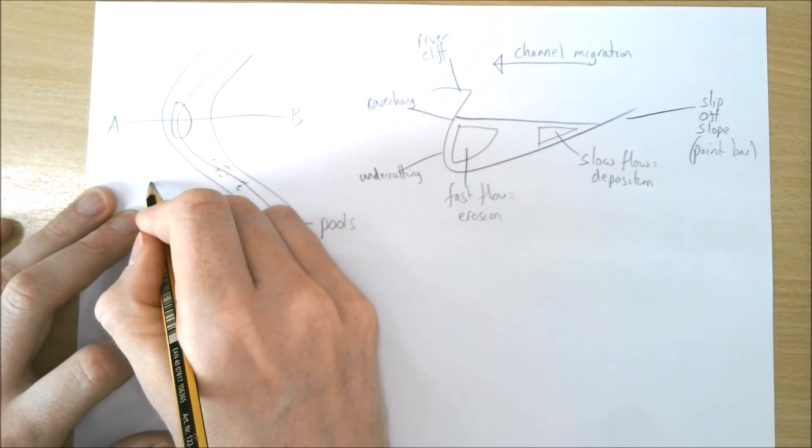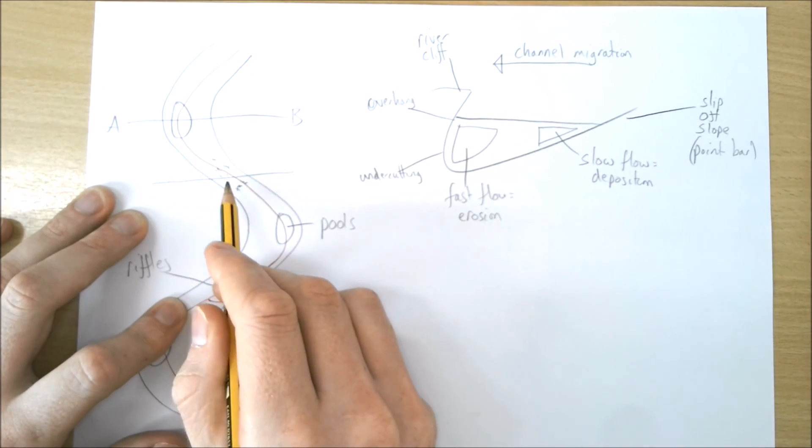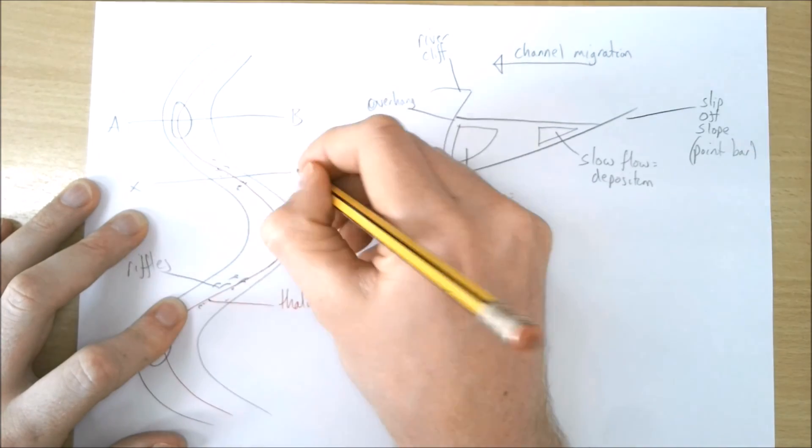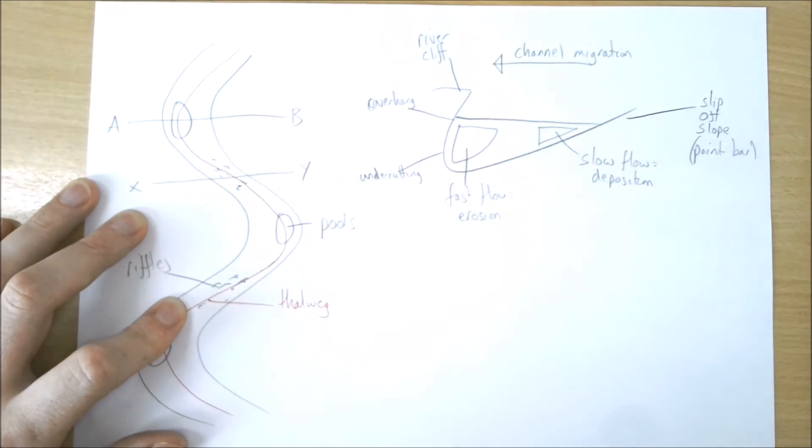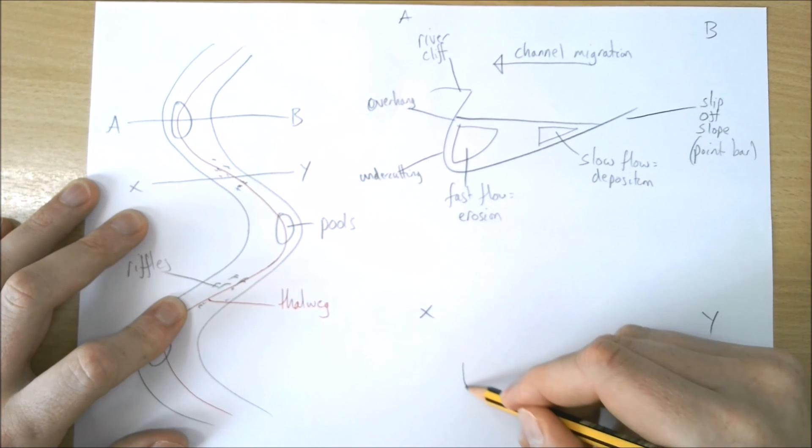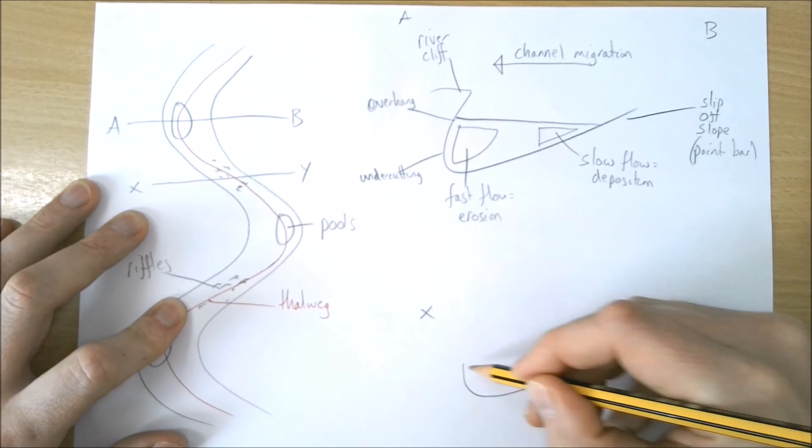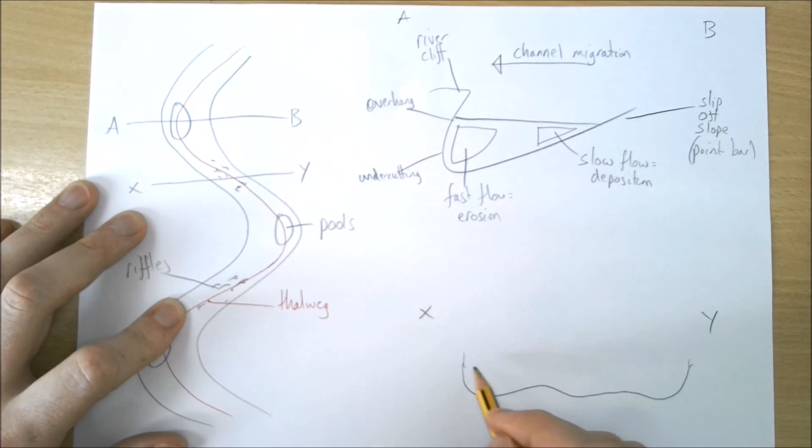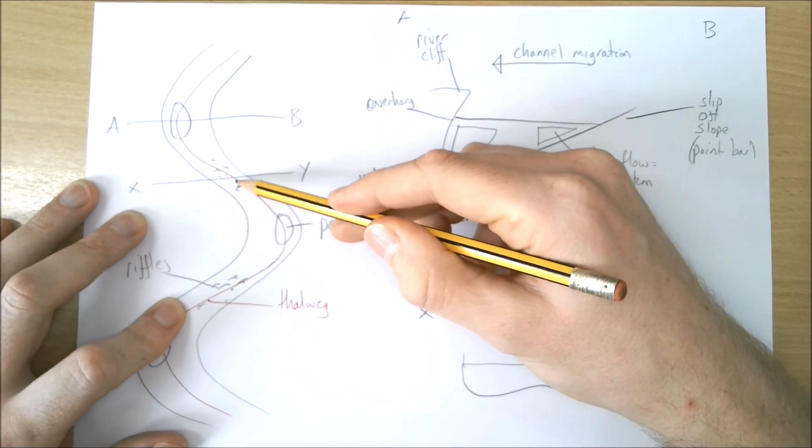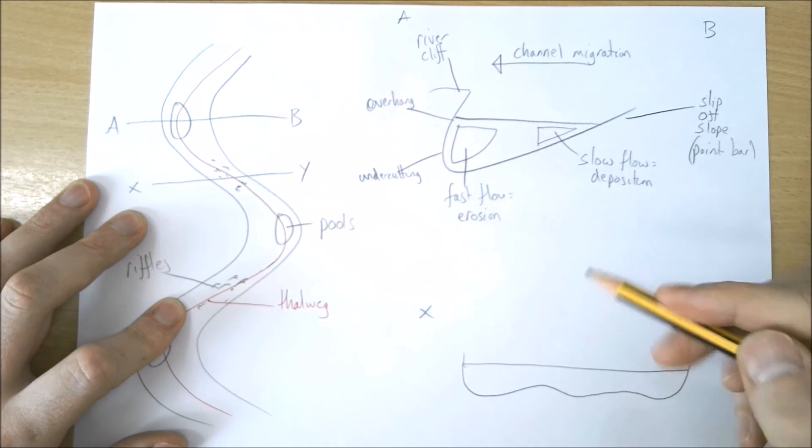At A-level, we're going to take it a step further. We need to understand riffles. Let's have this cross-section from X to Y. Sorry, I should have labeled the first one A and B. This is going to be slightly different. Notice I've purposely not drawn this particularly deep—that leads to these riffles being created.